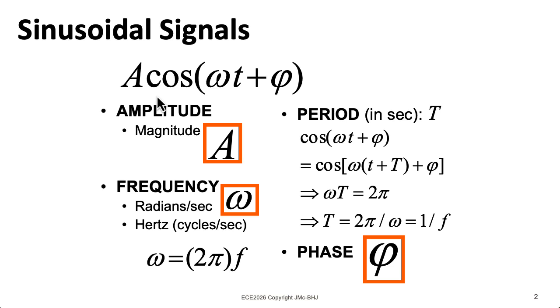Remember, in this class we prefer to represent sinusoids using their cosine representation instead of their sine representation. We're specifying sinusoids in terms of an amplitude A, which is a positive number, a frequency omega in radians per second.